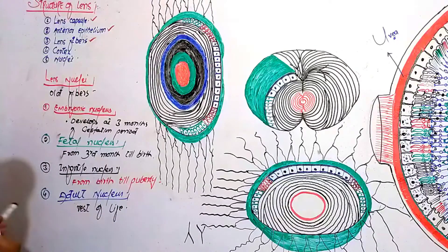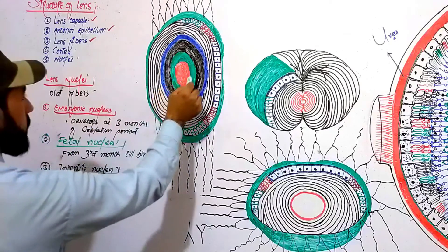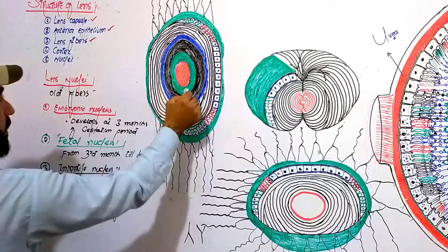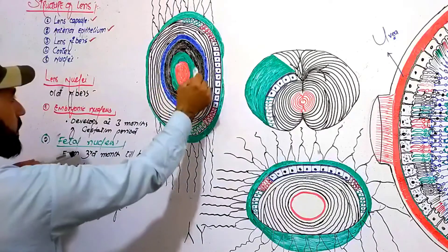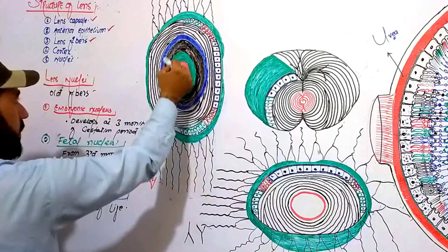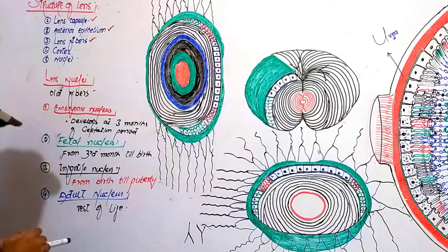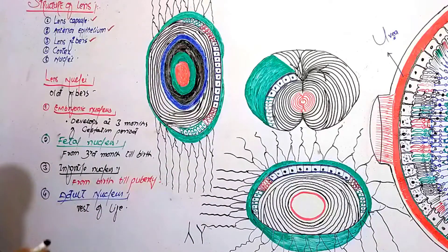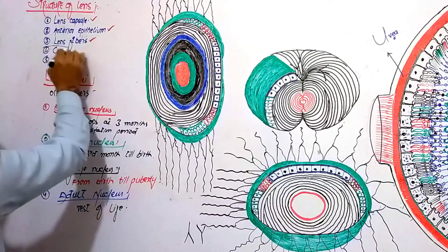To summarize the nuclei: there is the embryonic nucleus, the fetal nucleus, the infantile nucleus, and the adult nucleus.